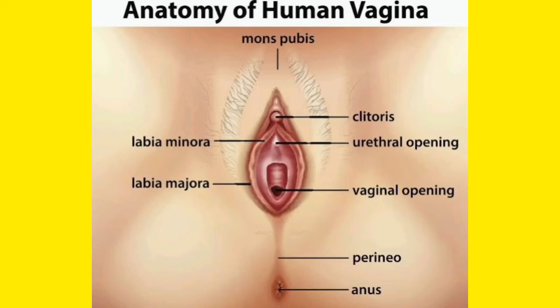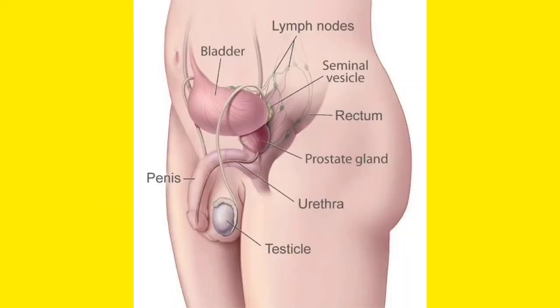Another structure is the urethral opening, which is the opening through which they urinate. So this is the diagram of the anatomy of the human vagina. Now let me discuss the anatomy of the human penis.